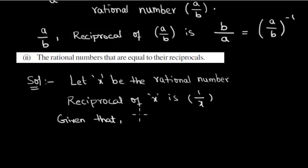Here we are given that the rational number is equal to its reciprocal. So x is equal to its reciprocal. That is, x is equal to 1/x.